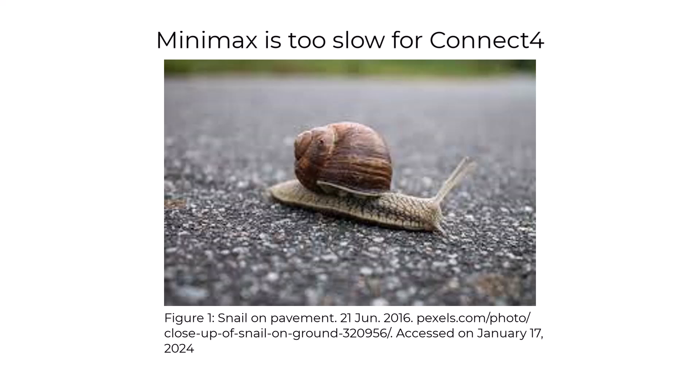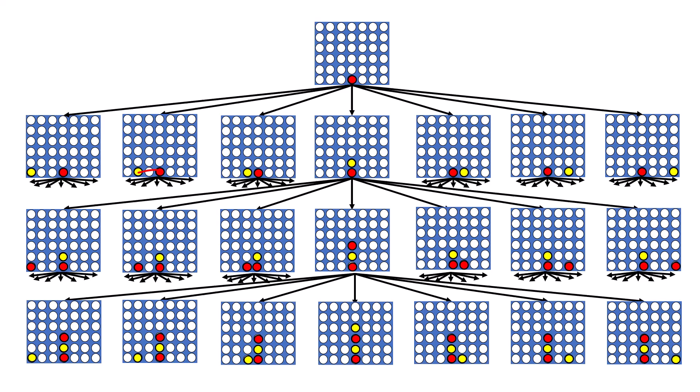In the context of Connect 4, the Minimax algorithm is not efficient on its own to make decisions quickly during gameplay. This is especially true in the early stages of the game, when there are numerous potential scenarios. As we can see here, all the possible game states cannot fit in this screen. That is because for every move, there are seven potential moves after that, and seven more potential moves after that.